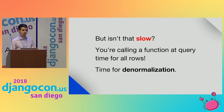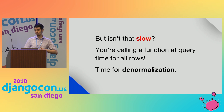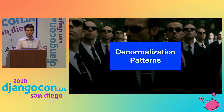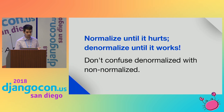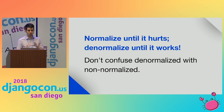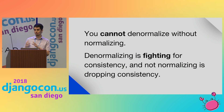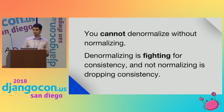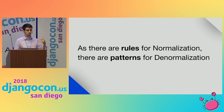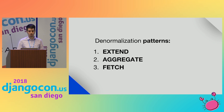But isn't that slow? Calling a function at query time for every row you return can be slow. When it is, it's time for denormalization. We shouldn't denormalize blindly — there are denormalization patterns we can use. First, we must normalize until it hurts, and then denormalize until it works. We should not confuse 'denormalized' with 'non-normalized.' You cannot denormalize without first normalizing. Denormalizing is fighting for consistency, while not normalizing is dropping consistency altogether. The denormalization patterns we'll talk about are: extend, aggregate, and fetch.